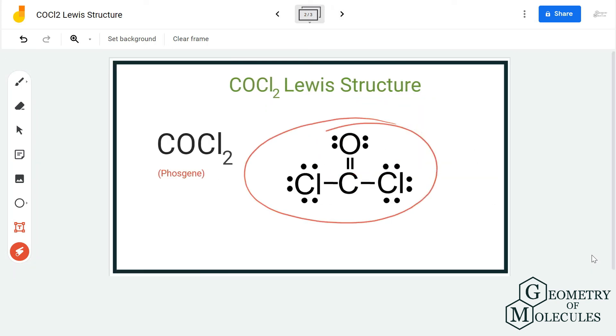Hence, this is the Lewis structure for COCl2, in which all the atoms have complete octets. There is a double bond between carbon and oxygen atom, and a single bond between carbon and chlorine atoms.